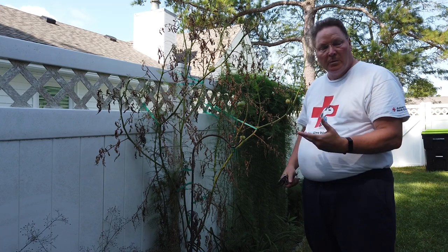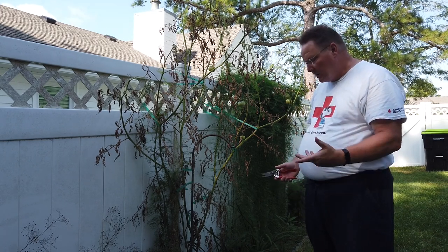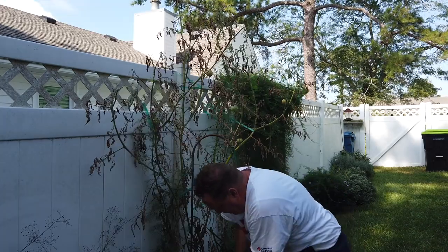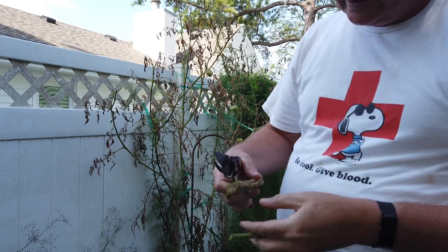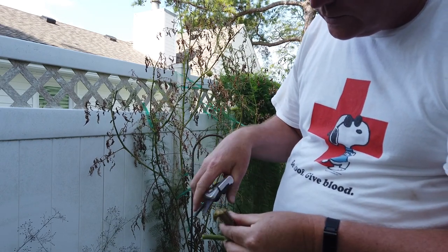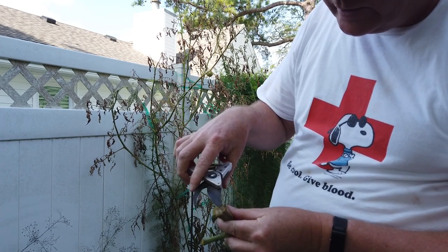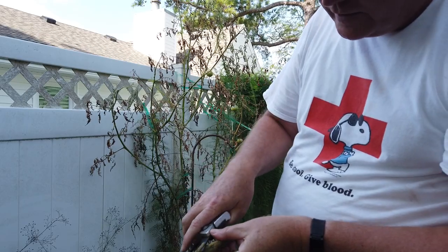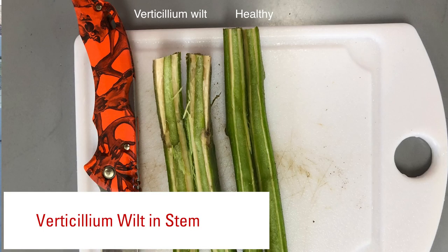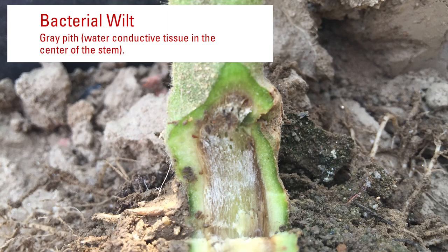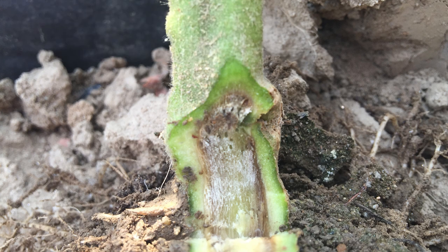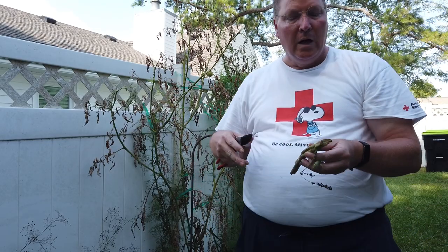It kind of looks like that may have happened here, but we're not sure, so I'm going to check. The only way to really check is to cut the base of the plant and open it up and take a look. Normally what I would see is black in that area, but what I'm seeing is more of a gray area, which indicates to me that this is probably bacterial wilt, which usually gets in through the root system and then causes the entire plant to wilt all at one time.